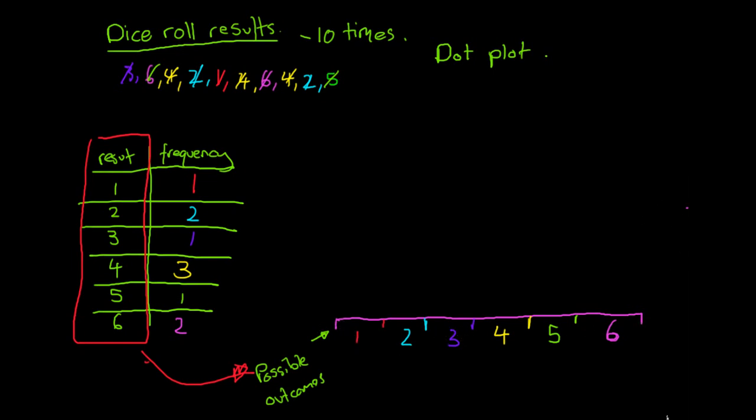Then what we do is with a dot plot we just go through, and we will put a single dot over our possible outcome where we record a frequency. So every time we have an outcome there we will just put a dot. So over here for the number of 1's I rolled, so there was one 1. Out of my 10 times I rolled a dice, 1 came up once. So I will put a dot there. I will just put this one dot.